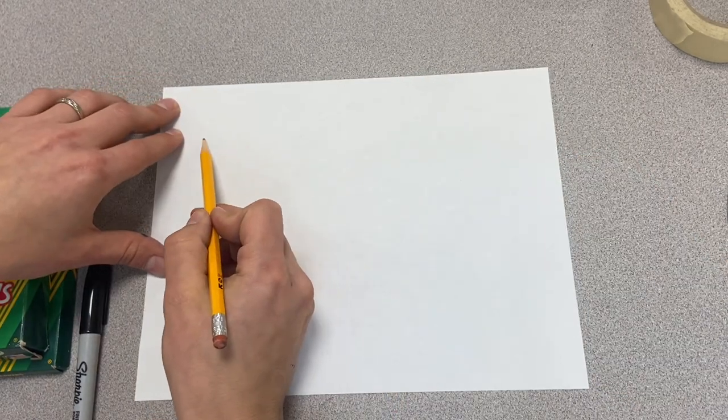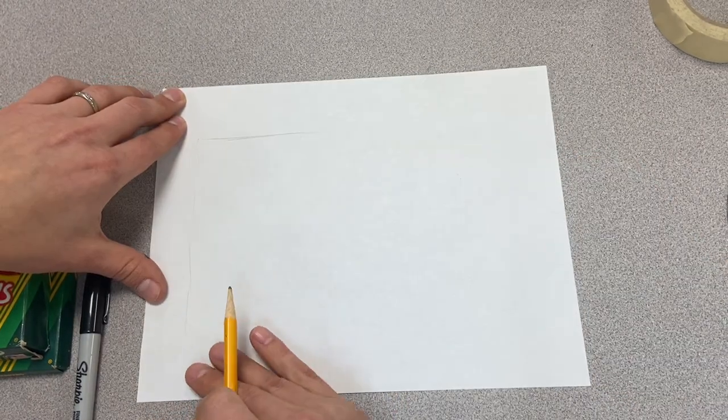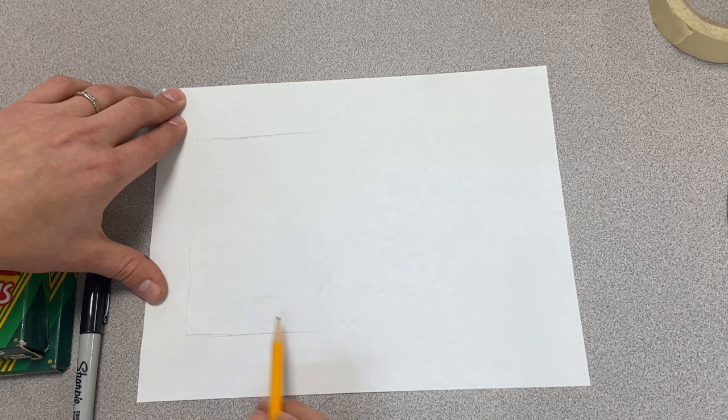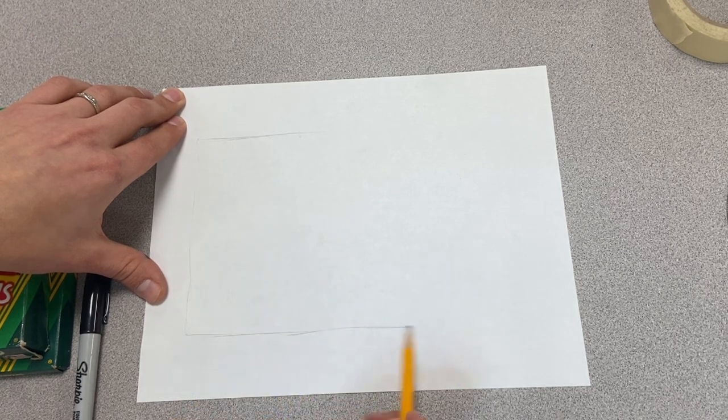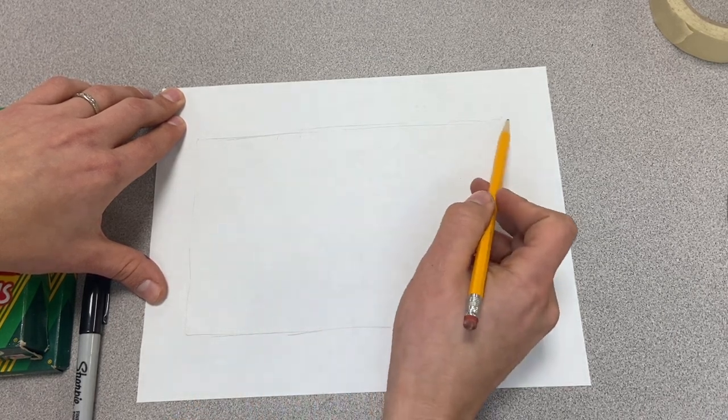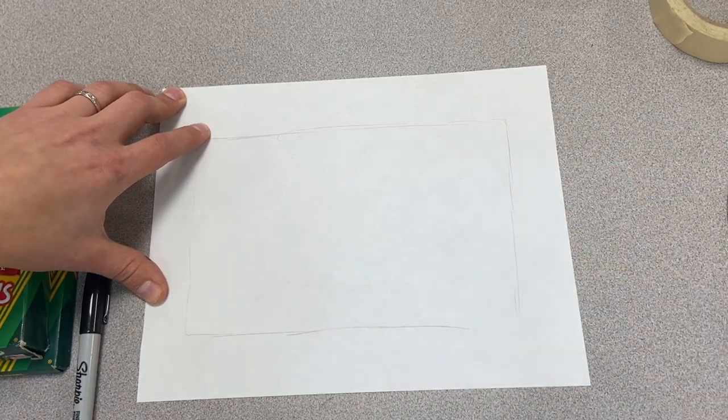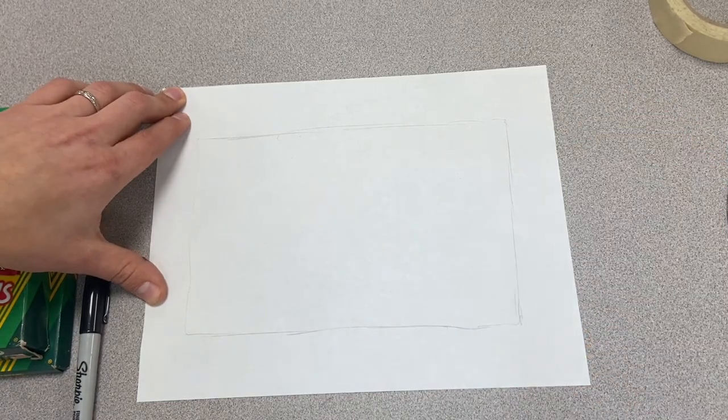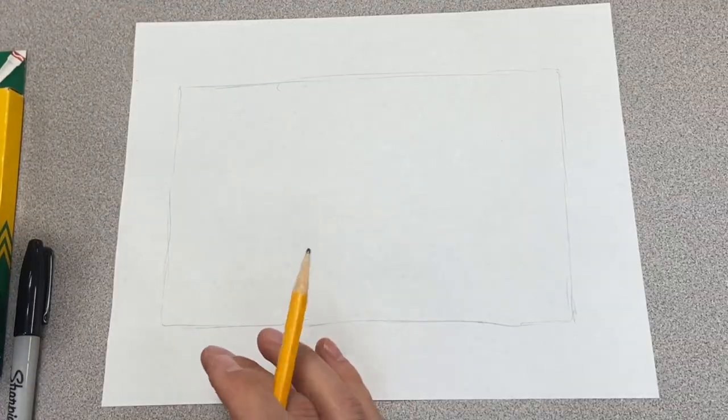You're going to start with a big, huge rectangle, maybe like two fingers on the side that you can kind of add the border. Go through that real quick. All right, nice, that looks good.